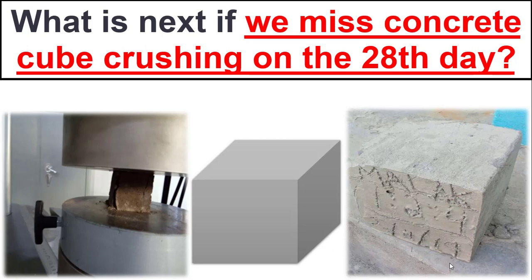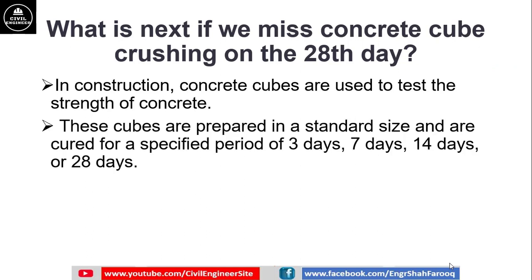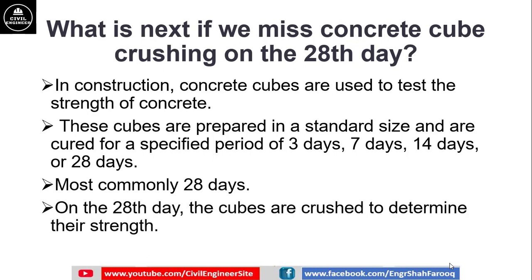In construction, concrete cubes or cylinders are used to test the strength of concrete. These cubes are prepared in a standard size, most commonly 6 inches, and are cured for a specified period of time. The most common curing periods are 3 days, 7 days, 14 days, or 28 days, with 28 days being the most commonly used. On the 28th day, the cubes are crushed to determine their strength.